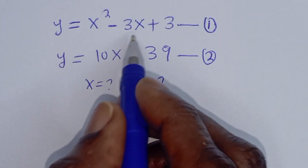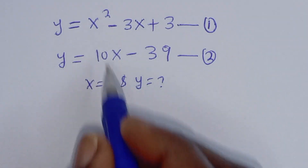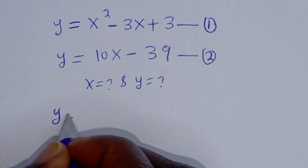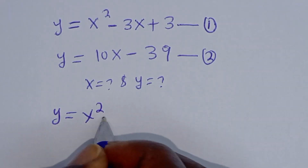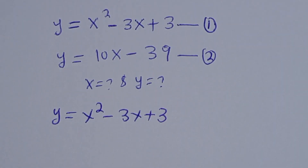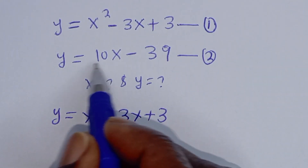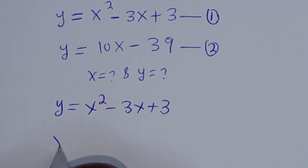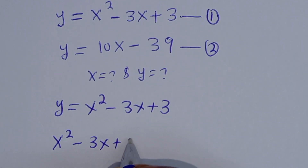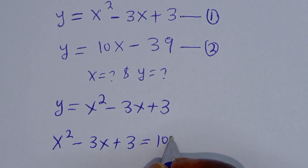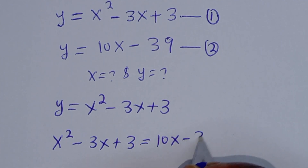From equation 1, we can substitute equation 2. That is, Y is equal to S squared minus 3S plus 3, and when Y is equal to 10S minus 39, we have S squared minus 3S plus 3 is equal to 10S minus 39.